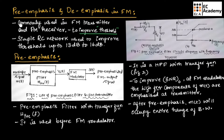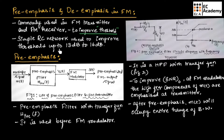Pre-emphasis and de-emphasis are commonly used in FM transmitter and FM receiver to improve the threshold. At the FM transmitter we will be using pre-emphasis, and at the FM receiver we will be using de-emphasis. Pre-emphasis and de-emphasis are simple RC networks that are used to improve threshold up to 13 to 16 dB.